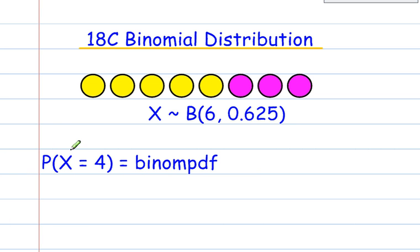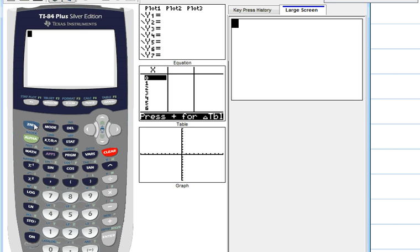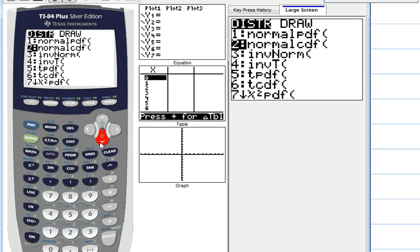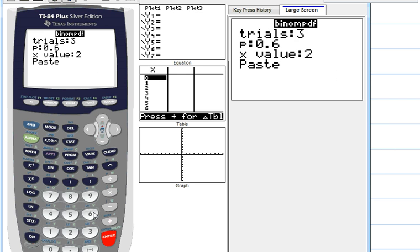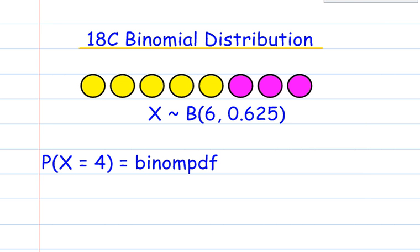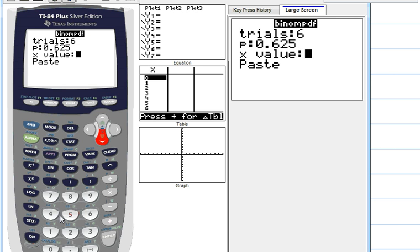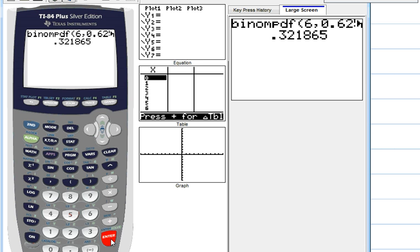So, let's first of all look at x being equal to 4. So, if x is equal to 4, then this would be a PDF. There are 6 trials, and it's 0.625. And my question wanted x to be equal to 4. This gives you a very long number here. I only want to round to three figures for IB, so that's 0.322.